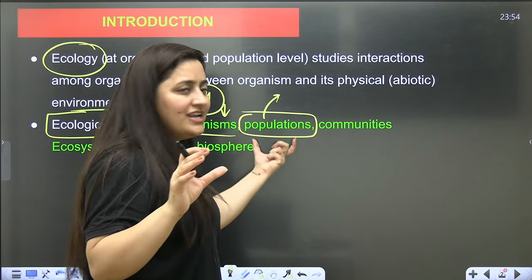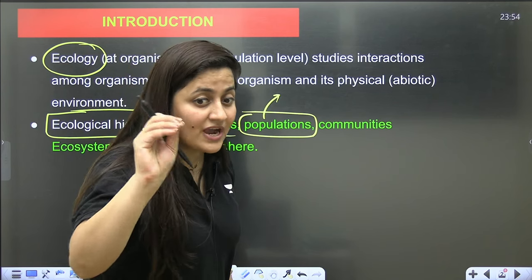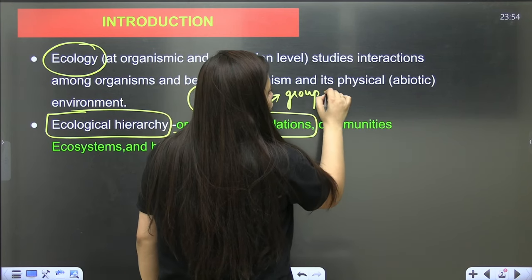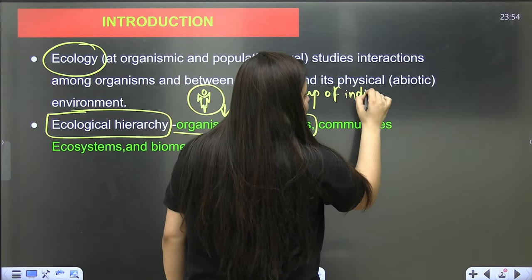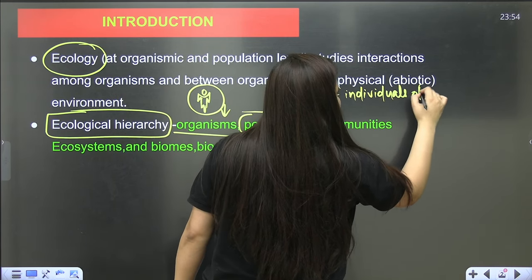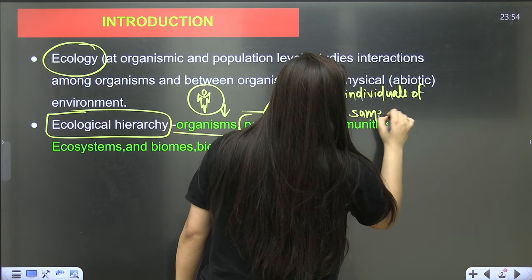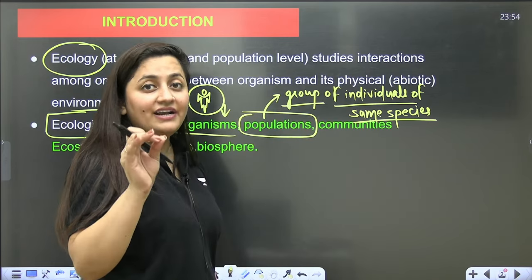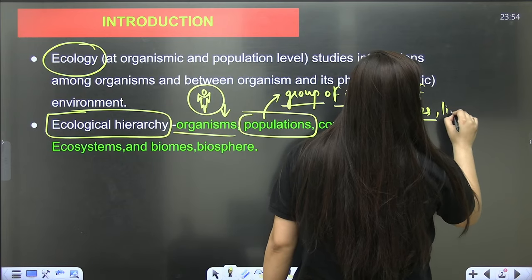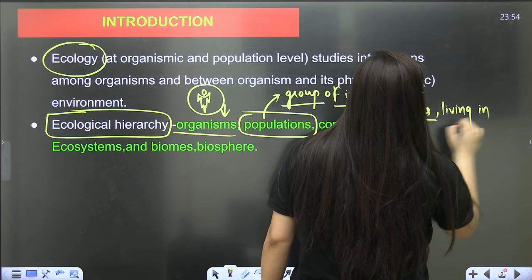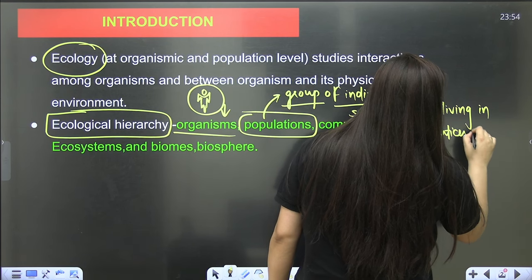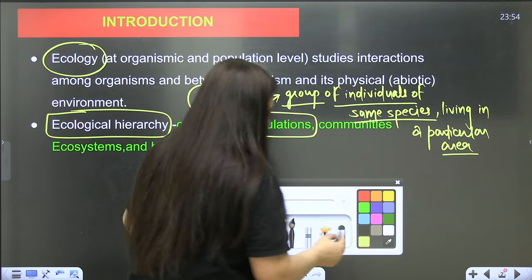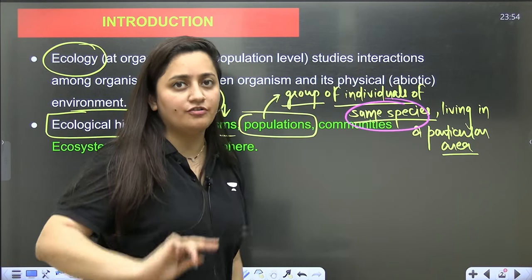Organisms of same species — please focus on this keyword. In the new syllabus, only the population part is there, so you will definitely get questions from this part. Population means a group of individuals of the same species living in a particular area at a particular time.